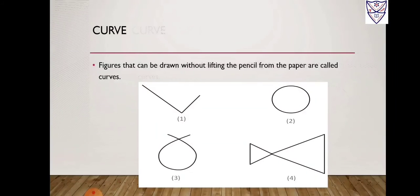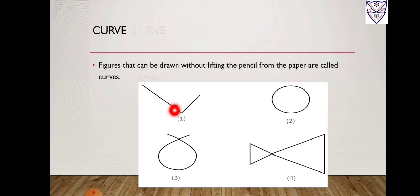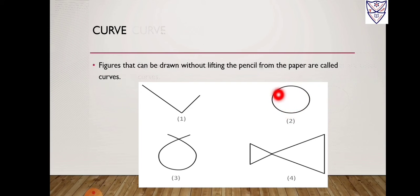So from this figure you can observe, students. According to the definition, these are the figures that are drawn without lifting the pencil. Here also, this is a circle that is drawn without lifting the pencil. This is also drawn without lifting the pencil. So these are examples of a curve.